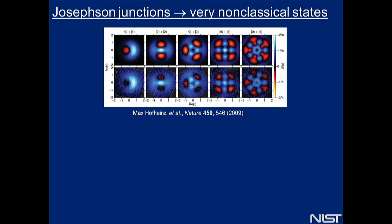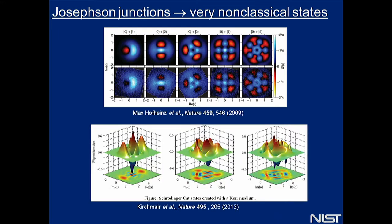With Josephson junctions, people have made very non-classical states. Here are some Wigner tomograms from UCSB — Andrew Cleland, John Martinis — and work from the Schoelkopf lab making cat states and very non-classical states. The ability to do these Yurke-Stoler interactions requires both nonlinearity and low dissipation. That's what we'd love to achieve directly in the mechanics, and if we can't do it directly, maybe we can incorporate these resources into electromechanical circuits.